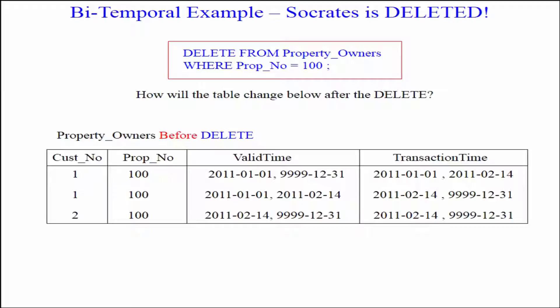And as you can see here: DELETE FROM property_owners WHERE property_number = 100. We just deleted. There are our three rows before the delete.